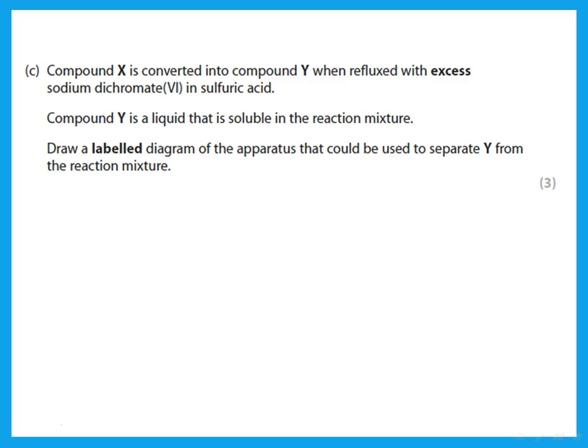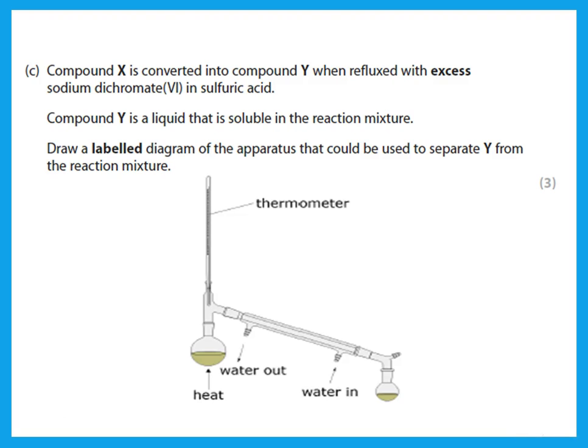To separate compound Y after complete oxidation, use a distillation apparatus. You must label the apparatus carefully, especially the condenser: water enters from the bottom and exits from the top. Heat the flask, include a thermometer, and use a receiving flask that is open on one side to prevent any accumulation of pressure.